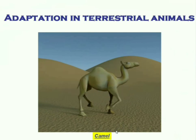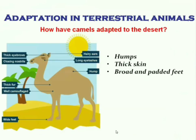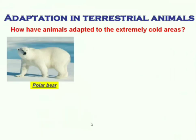The camel stores fat in its hump, and this fat can be converted into water when needed. Camels also drink about 10 buckets of water at a time and have thick skin that protects them from the heat of the sun. Camels also have broad and padded feet which help them walk comfortably on loose sand.